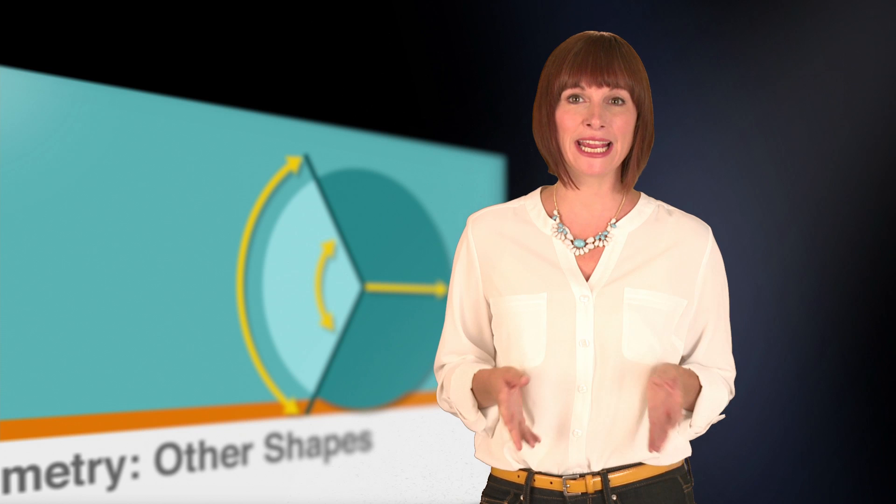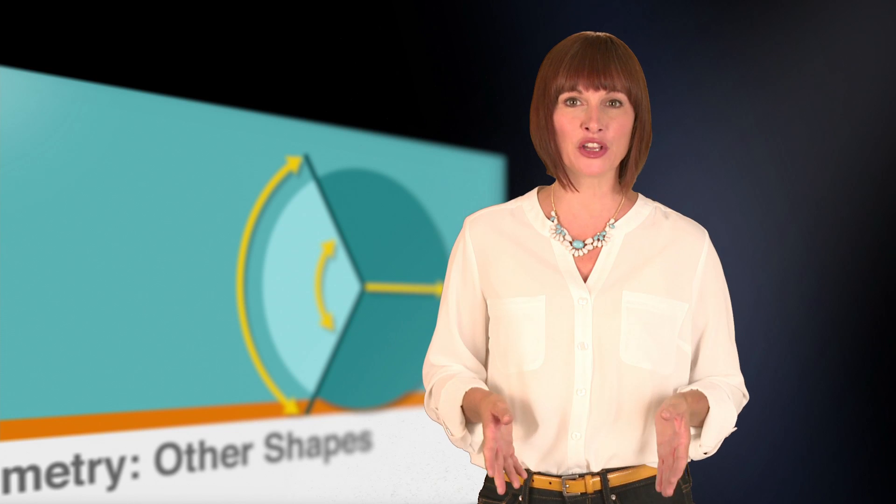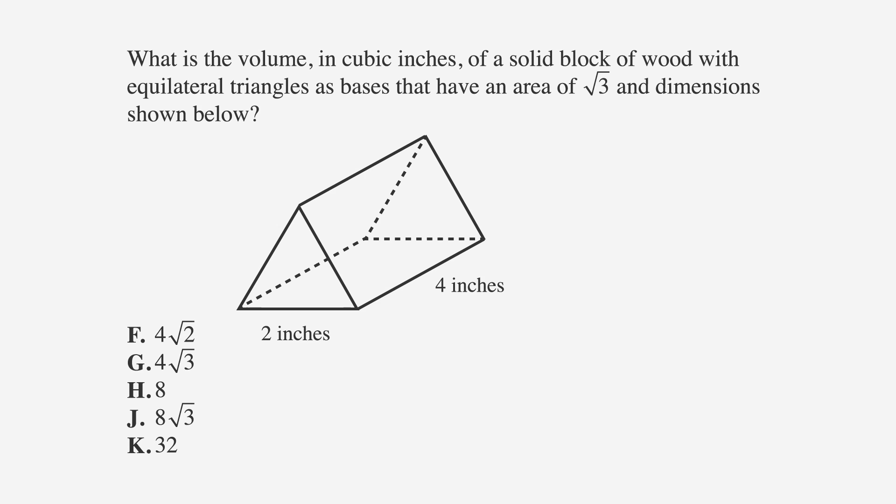Let's apply this to solve an ACT problem that asks for the volume of a block of wood. What is the volume, in cubic inches, of a solid block of wood with equilateral triangles as bases that have an area of the square root of three and dimension shown below? Let's underline the facts, circle the keywords, and label the answer choices.